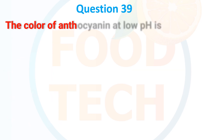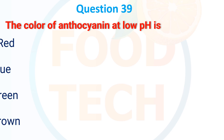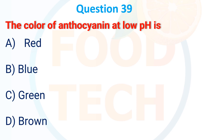Question 39. The color of anthocyanin at high pH is: A. Red. B. Blue. C. Green. D. Brown. The correct answer is A: red.